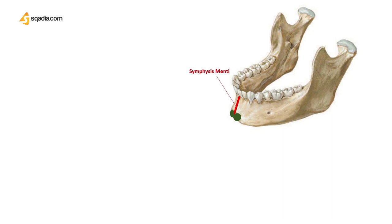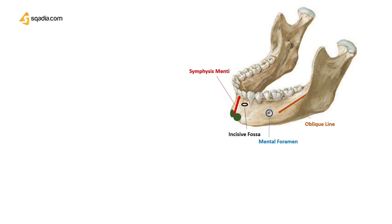Look for the mental protuberance, a median triangular projecting area in the lower part of the midline. The inferior lateral angles of the protuberance form the mental tubercles. The mental foramen lies below the interval between the premolar teeth — it is a hole that makes a canal into the inside of the jaw. The oblique line is the continuation of the sharp anterior border of the ramus, running as a bony elevation toward the mental foramen. Lastly, there is the incisive fossa, a depression located below the incisor teeth.